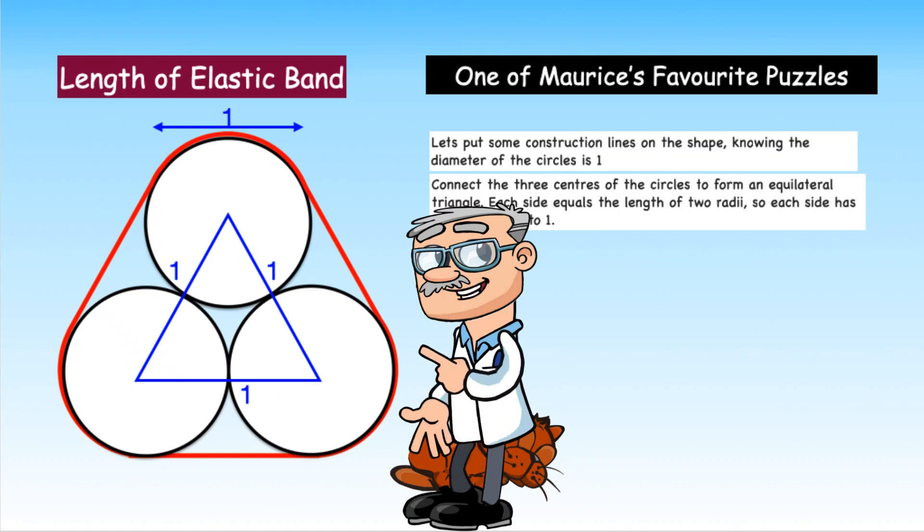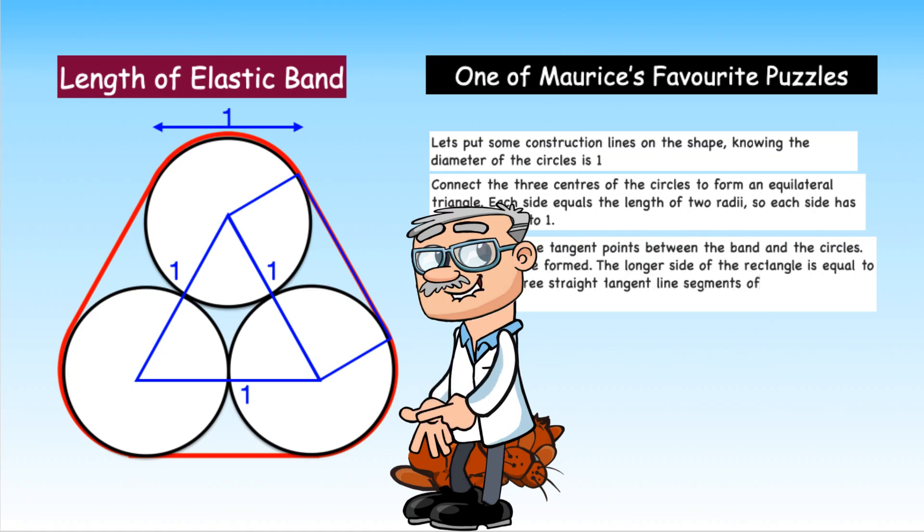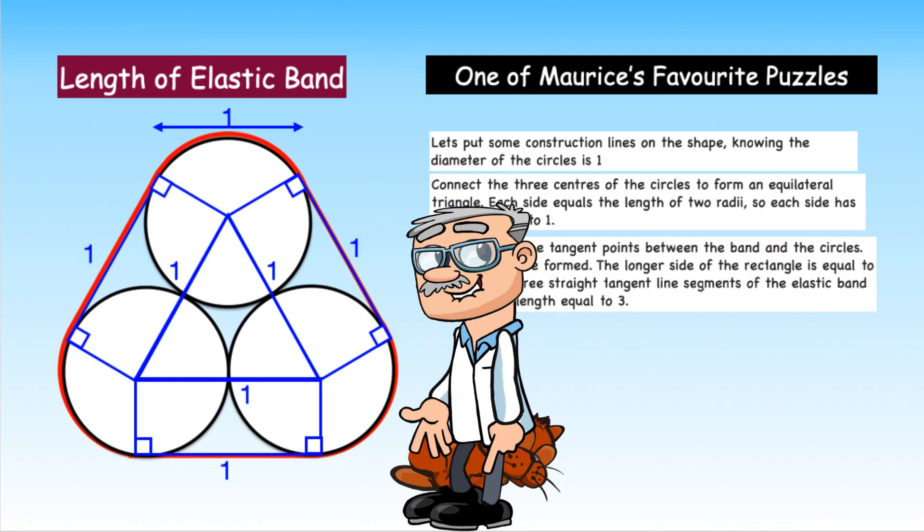Now draw radii to the tangent points between the band and the circles. Three rectangles are formed. The longer side of the rectangles is equal to one. Thus the three straight tangent line segments of the elastic band have a total length equal to three.